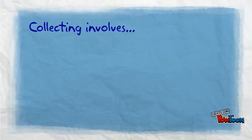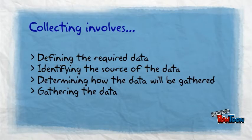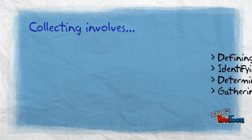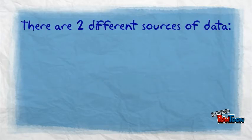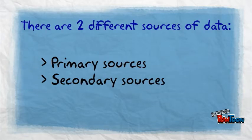Collecting involves defining the required data, identifying the source of data, and determining how the data will be gathered and gathering the data. There are two different sources of data: primary sources and secondary sources.